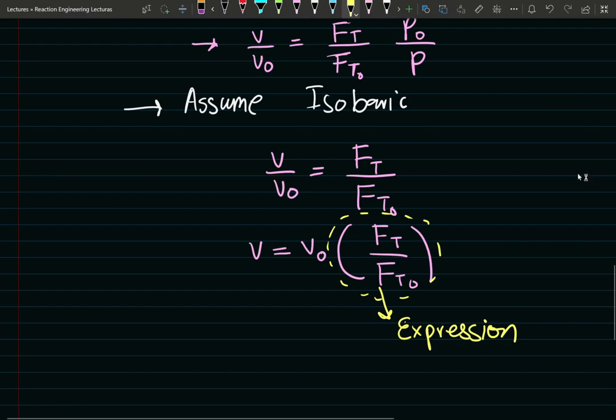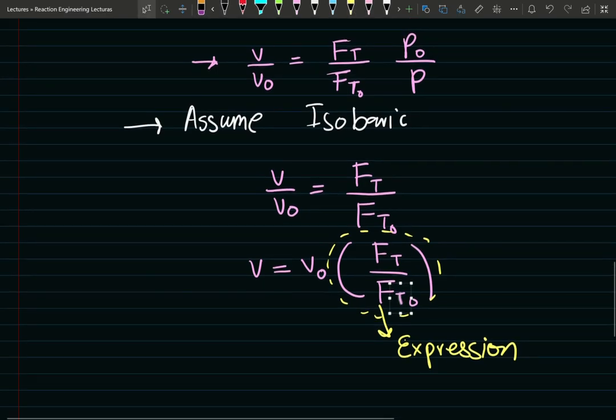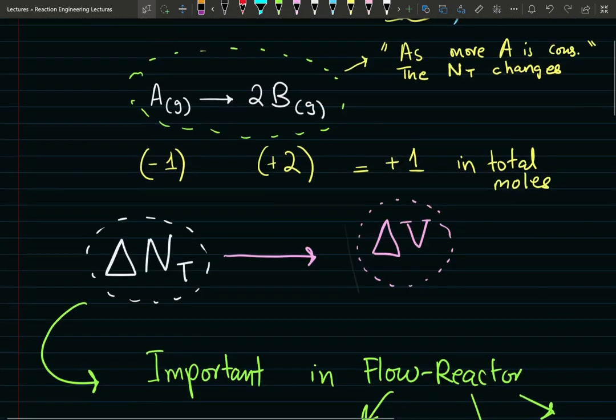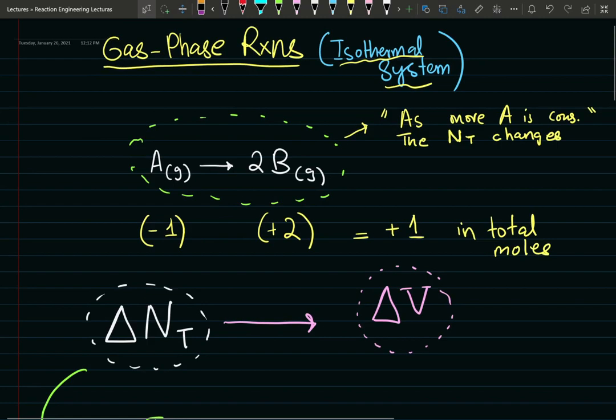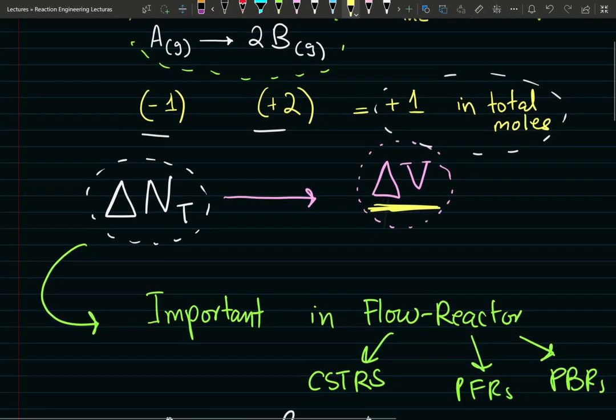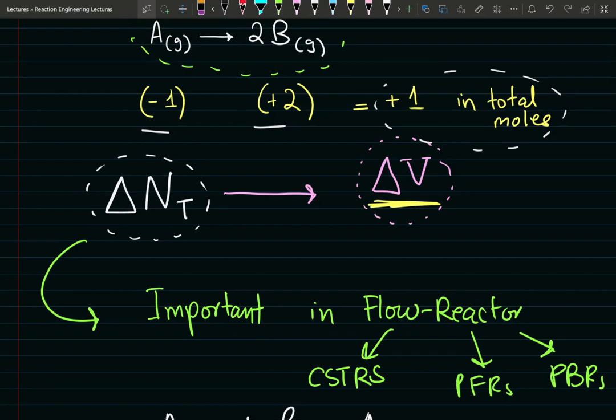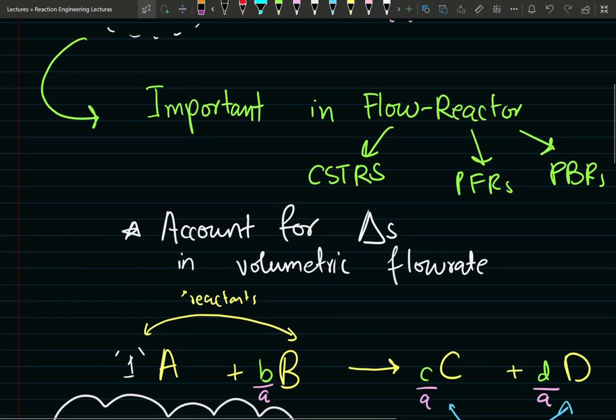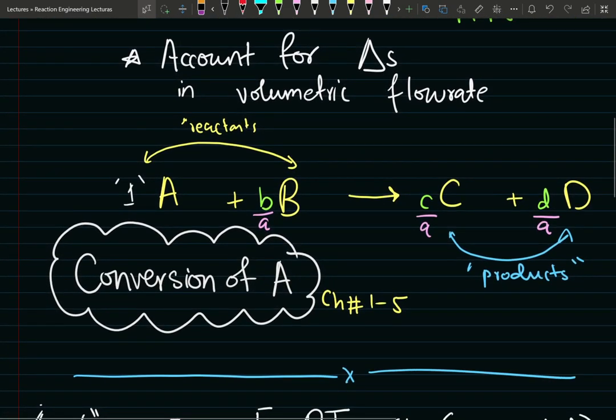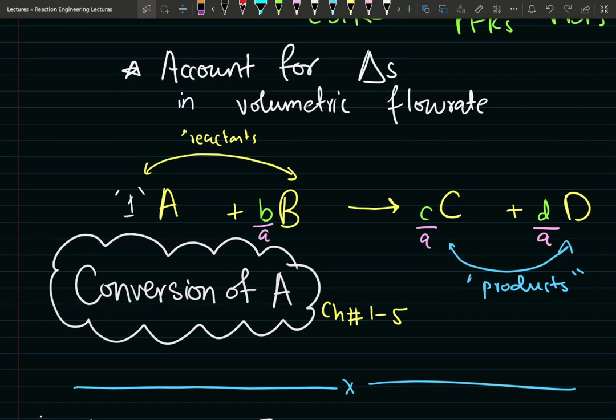We're going to talk about that in the next video. So stay tuned, ladies and gentlemen. Just to give you a quick recap, we talked about how gas phase reactions cause problems. Change in total moles, change in total number of moles is going to translate into change in total volume of the system. This is important. This becomes important in flow reactors. Batch reactors are usually rigid vessels. So that's not a problem. Flow reactors, it becomes an issue.